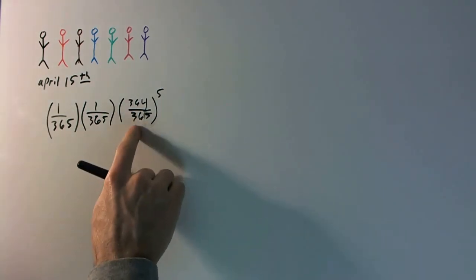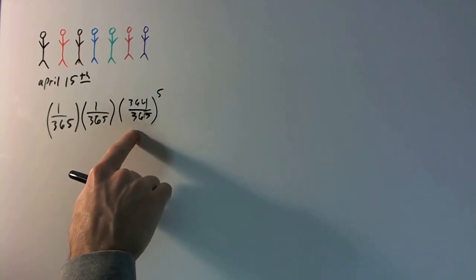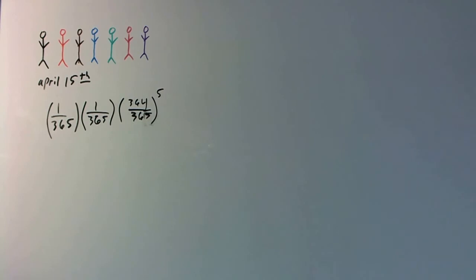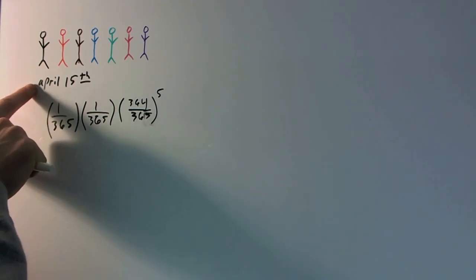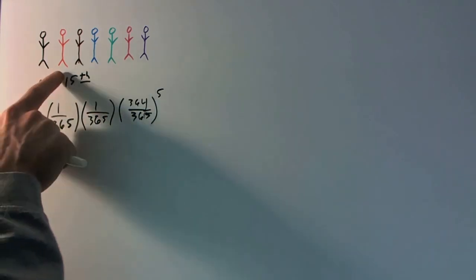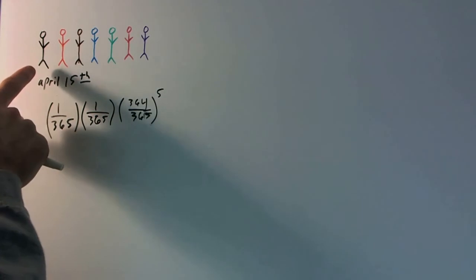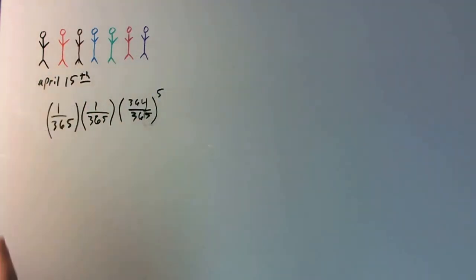So this is taking into account the third, the fourth, the fifth, the sixth, and the seventh person, the fact that they can have any other birthday besides April 15th. But this is a problem. It doesn't necessarily, we know that the first person will have a birthday on April 15th. But it doesn't necessarily have to be the second person. It can be the first and the third. It can be the first and the fourth. It can be the second. It doesn't even necessarily have to be the first person. It can be the second and the third, second and fourth, et cetera. You get the point here.